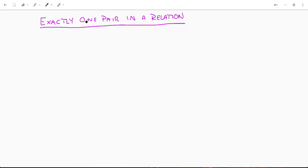Hey, so we are not going to be doing a proof in this video. Instead, we're going to discuss the formal way to write out what it means to have exactly one pair in a relation.